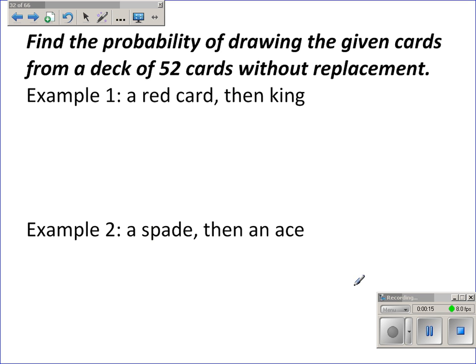Our first node will be whether or not we draw a red king or not. So this would be a red king. By the way, that probability would be 2 out of 26. There are 26 red cards, and 2 of them are kings.